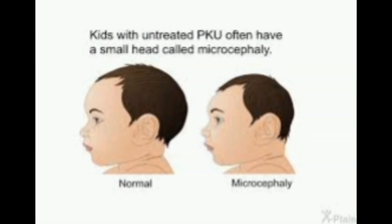Let's talk about the dangers of carriers marrying carriers. With SCD you talk about the sickler, but with PKU, the brain — the head of that child becomes smaller; that is microcephaly, whereas the normal child will have that normal head size. The brain is very important. You can imagine the kind of brain such a child will have. So PKU affects the brain because the child with PKU cannot use phenylalanine, which is very necessary as a protein for certain aspects of the brain.